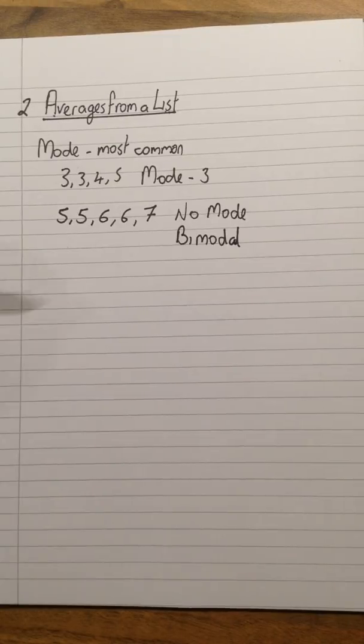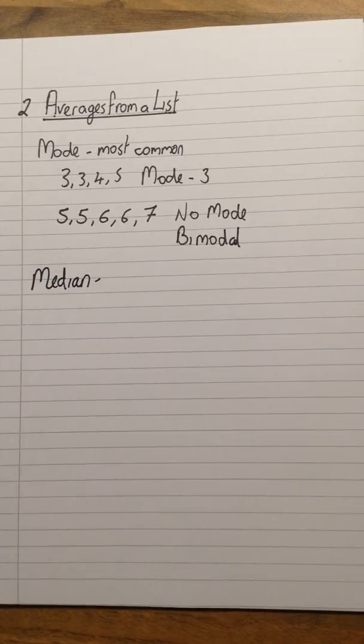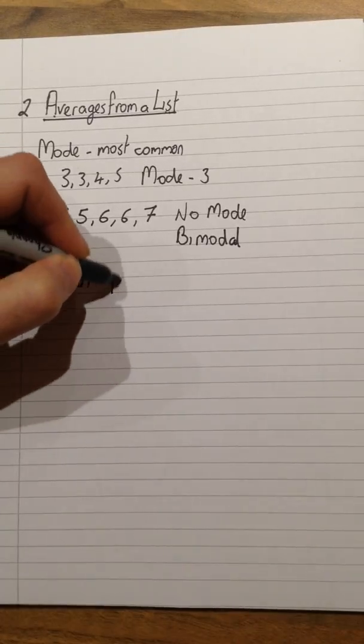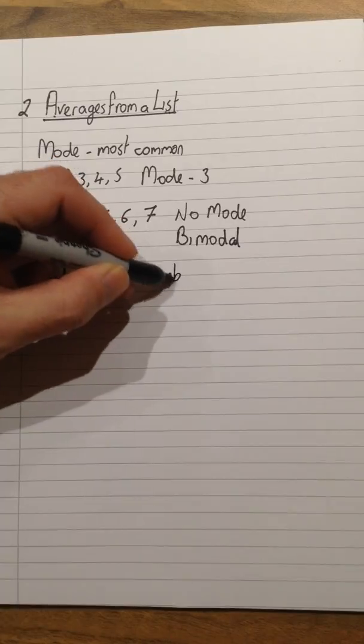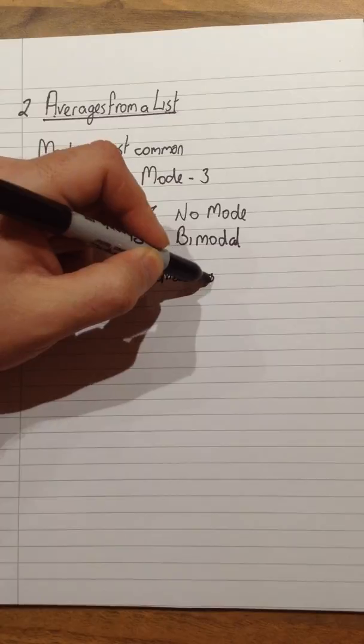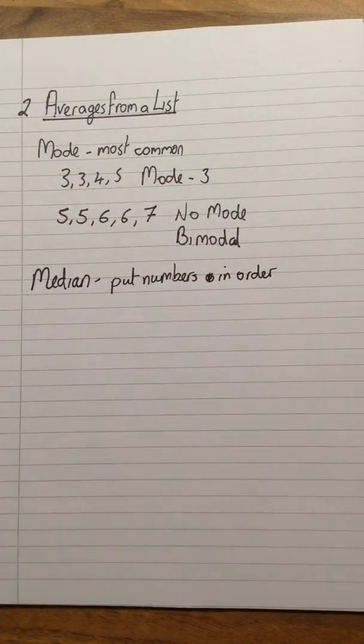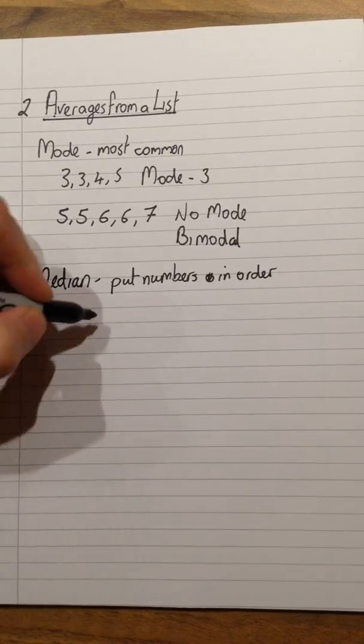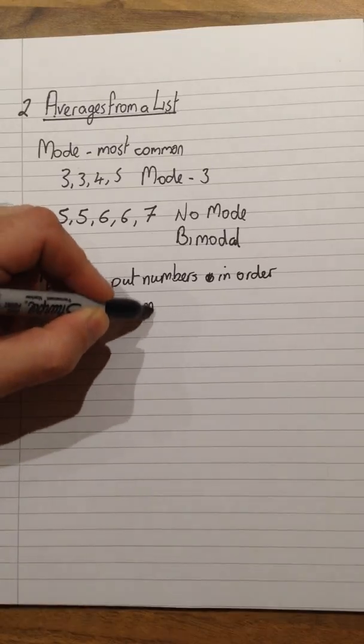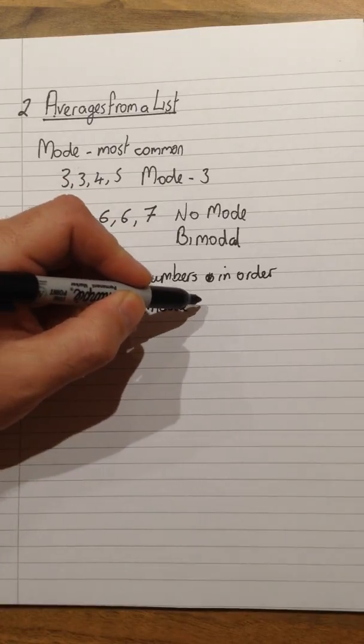The next type of average is the median. To find the median we need to do two different things. Step number one is we put all the numbers in order. Unlike the mode, this must be to do with numbers. When we put the numbers in order, that can be smallest to biggest or biggest to smallest, we then need to find the middle value.